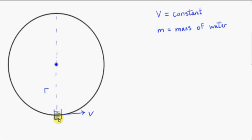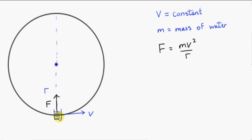Let's suppose that we have a container of water that is rotating with constant speed v in a vertical circle of radius r. We are going to analyze the forces on the water in this container as the container moves around the circle. Since we're dealing with uniform circular motion, we know what the resultant force vector looks like: it points towards the center of the circle and its magnitude is mv squared over r.